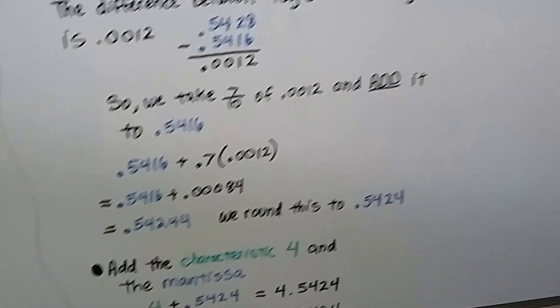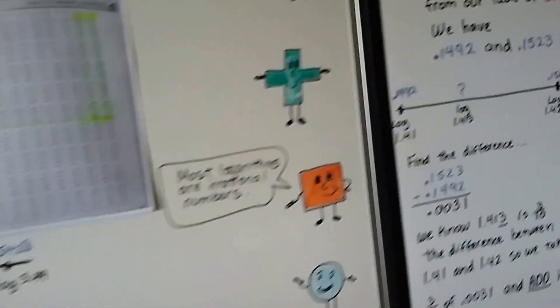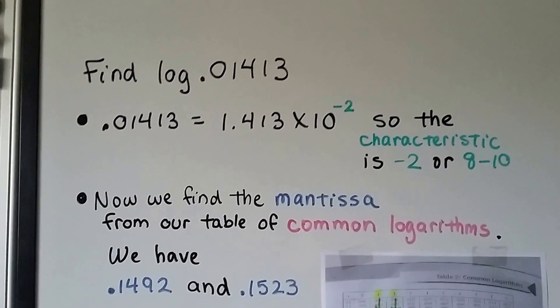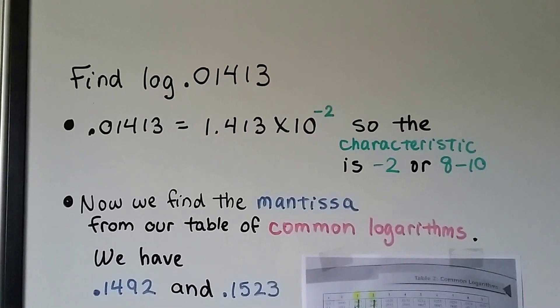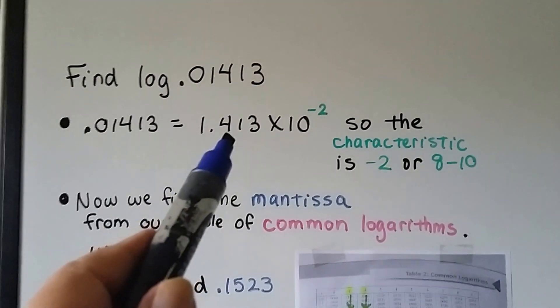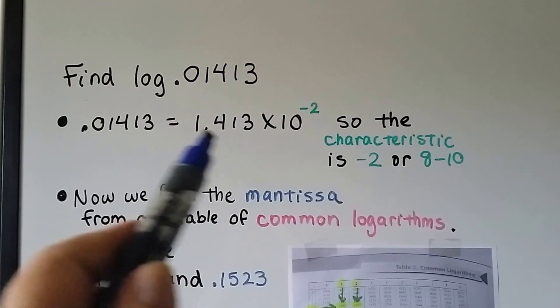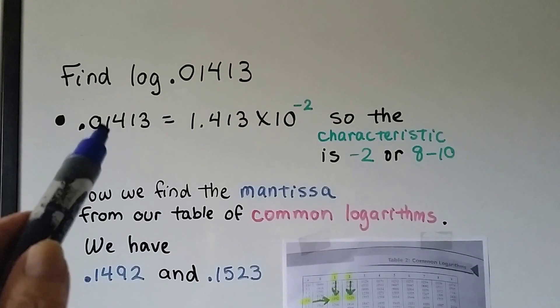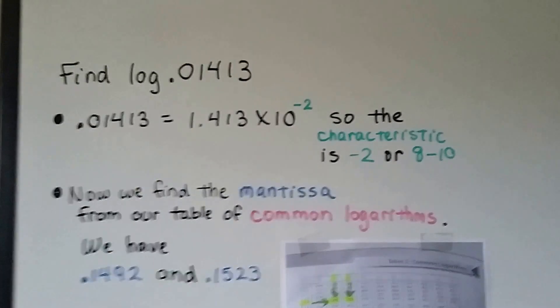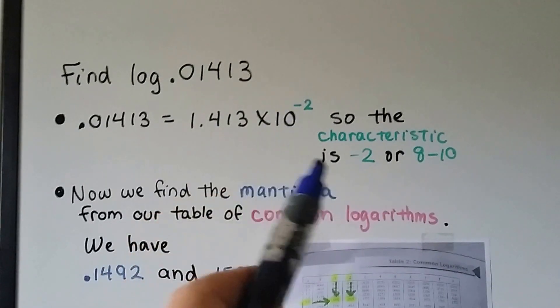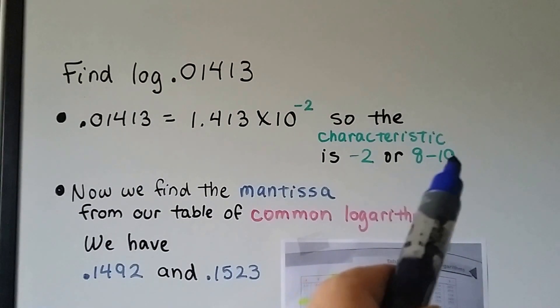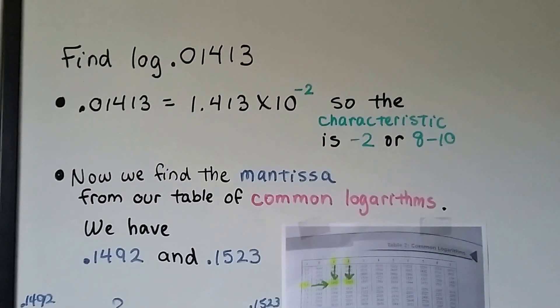Let's try it going the other way with a negative number for our characteristic. If we wanted to find log 0.01413, we write it in scientific notation, and it's going to be times 10 to the negative 2 exponent because we have to move the decimal point back. So we know our characteristic is negative 2, and from the previous videos it can be represented as 8 minus 10 because that makes negative 2.